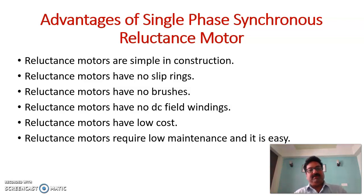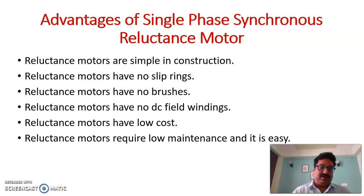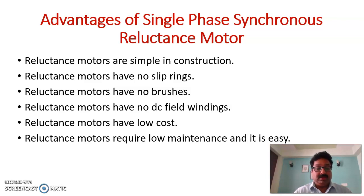Regarding its advantages: this single-phase reluctance motor is simple in construction. This motor has no slip rings, which reduces losses. This machine does not have brushes and does not require any DC field winding. Overall, the machine cost is low, and because of the absence of slip rings, brushes, and DC field windings, both the overall machine cost and its maintenance cost are low.